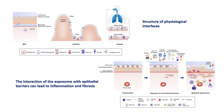On the other edge of the structure, we find the intestinal epithelium. In this case, this structure is meant to allow the passage of nutrients through it. It is composed of a single layer of epithelial cells together with other cell types like Paneth cells or tuft cells. And with intermediate features between the skin and the intestine, we have the airways.